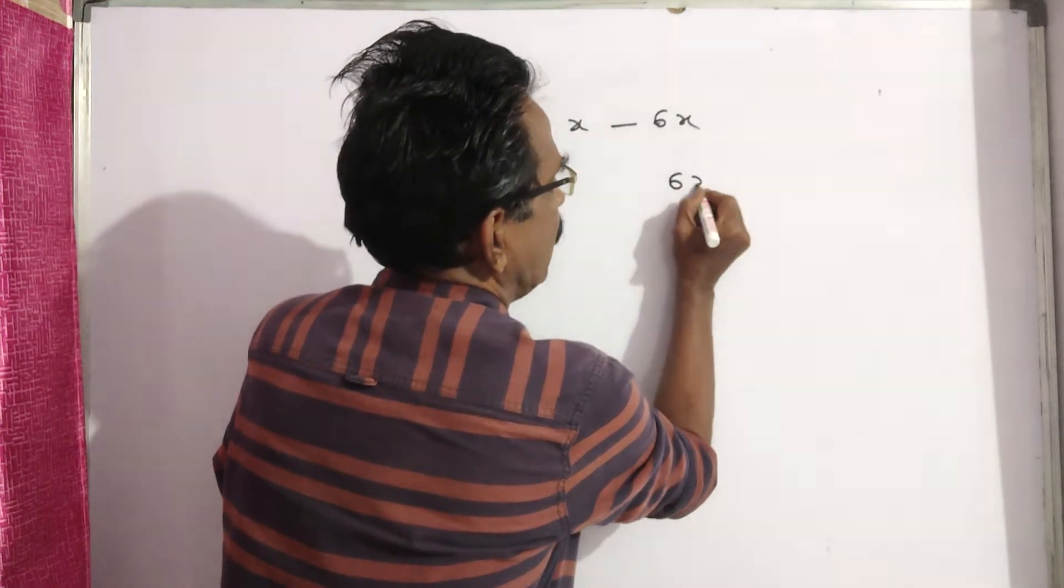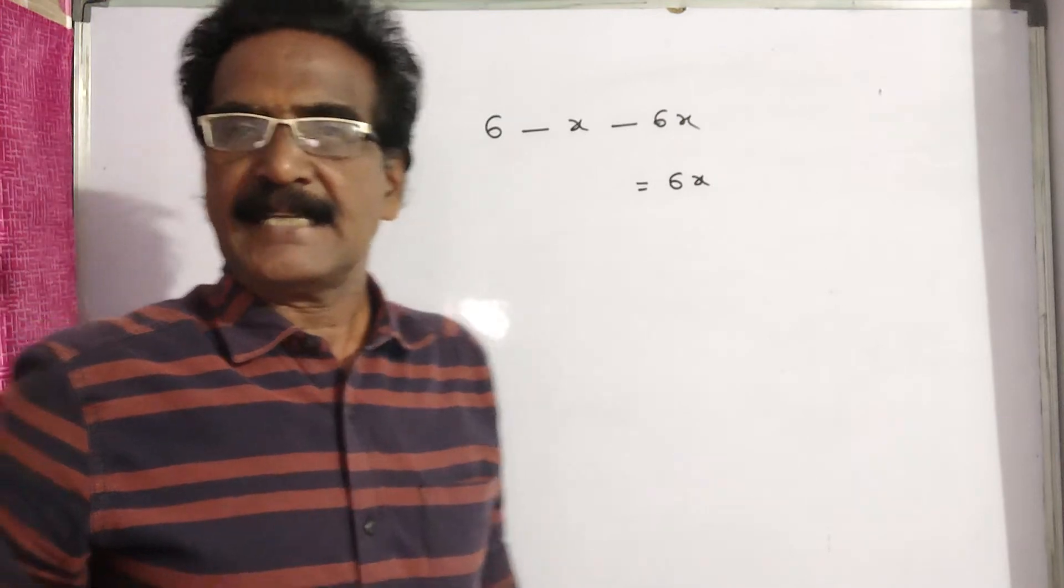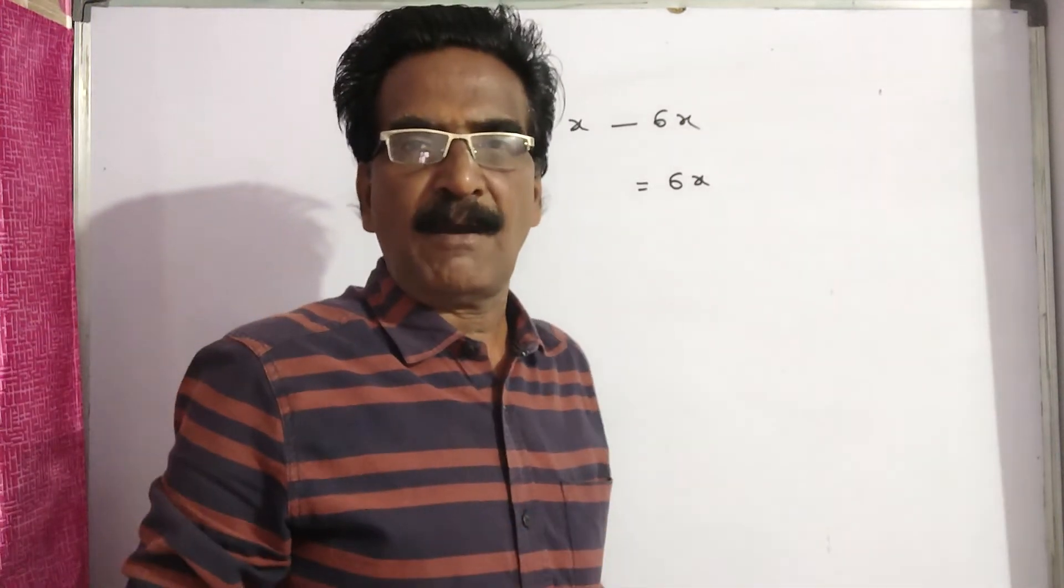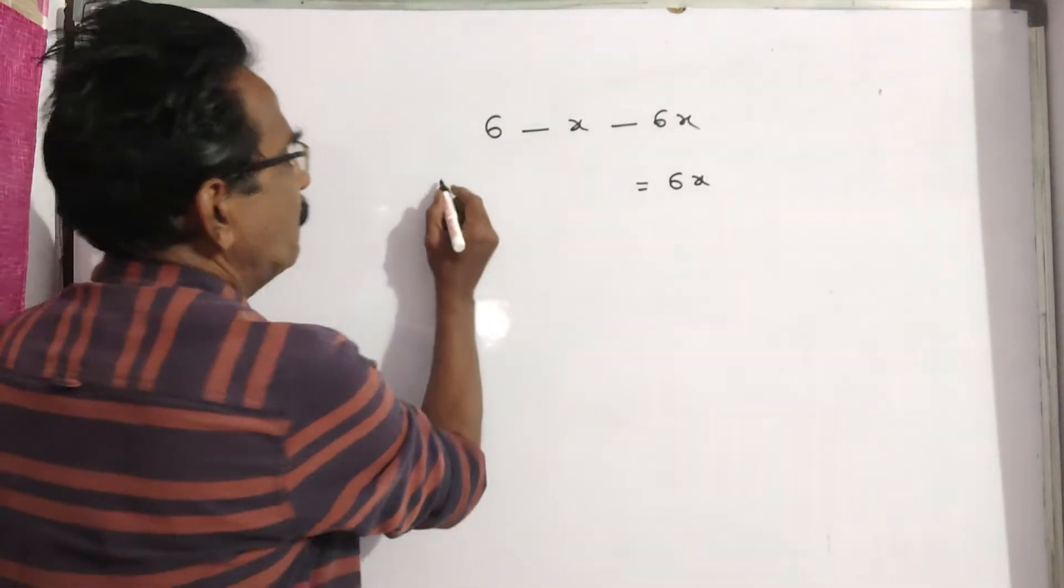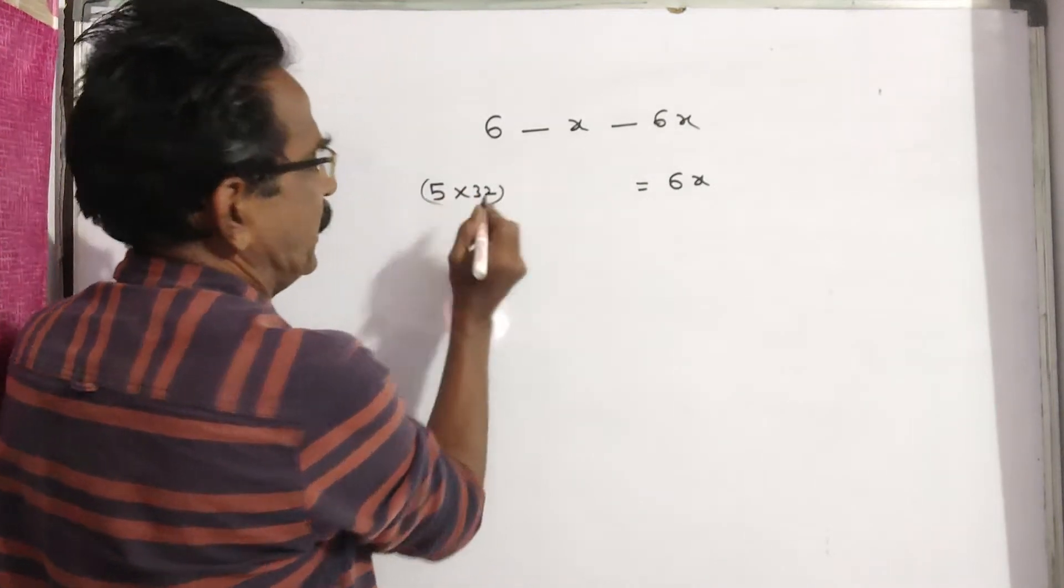This total money, 6x, is equal to the sum of the amount spent by 5 persons.